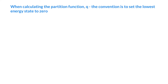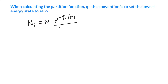Let's look at the calculation of partition functions. The partition function gives us a way to calculate the number in a state i, and it's equal to N times e to the minus the Boltzmann probability, e_i over kT, divided by the partition function. The partition function — the thing on the denominator — is just the sum of all those Boltzmann probabilities.